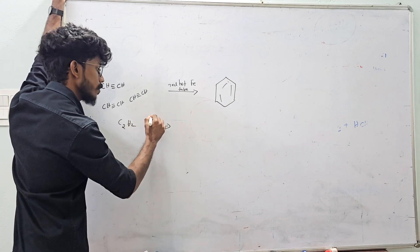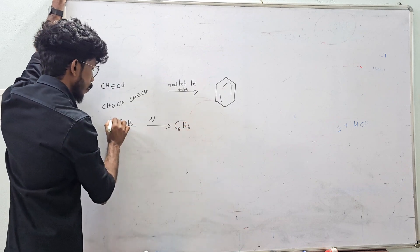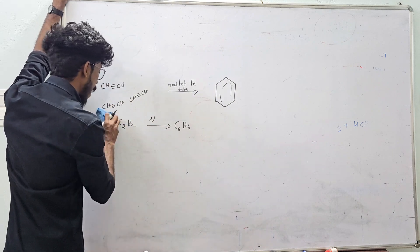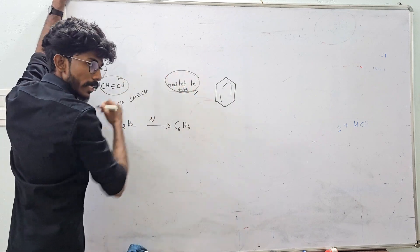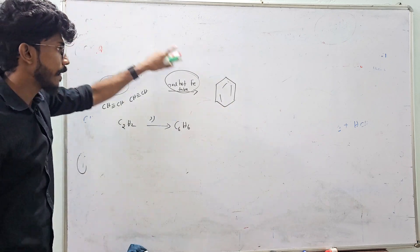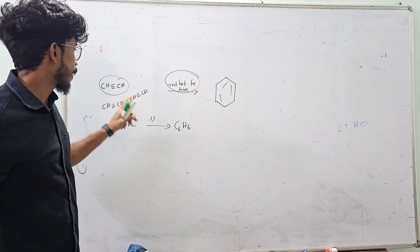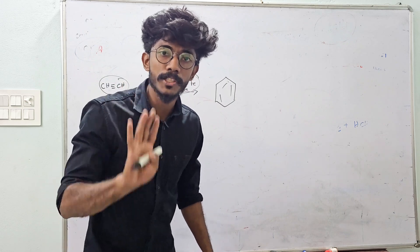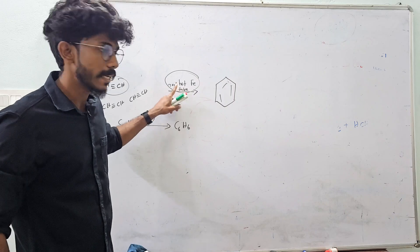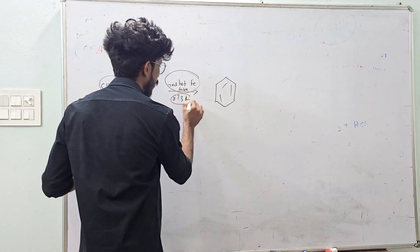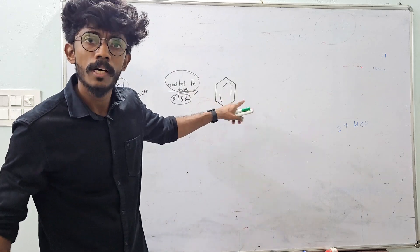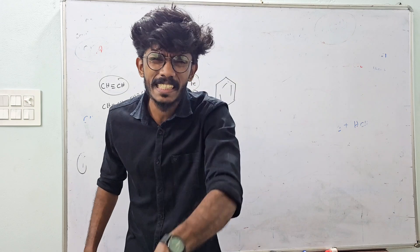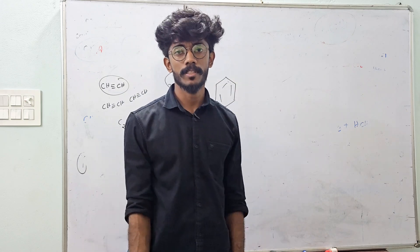That means benzene. We have the equation: C2H2 (ethyne) + red-hot iron tube → C6H6. Actually, benzene is C6H6. If we have 3 ethyne molecules, we get benzene C6H6. This reaction gives benzene.